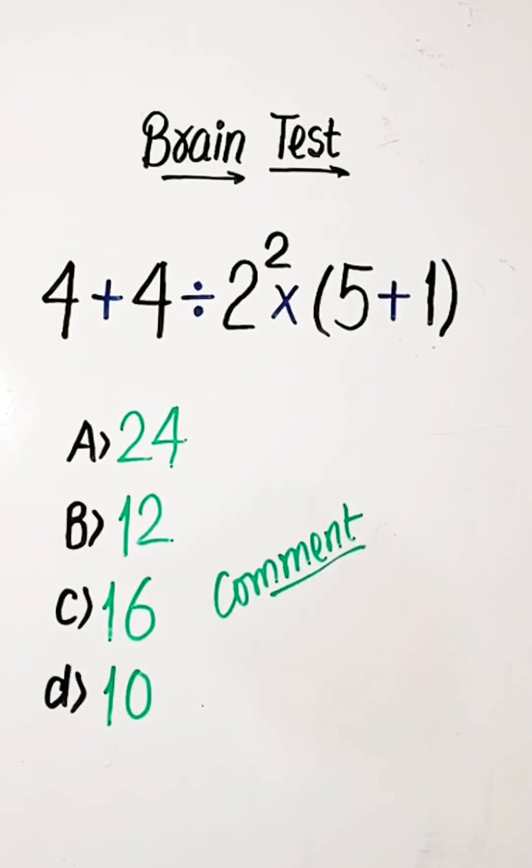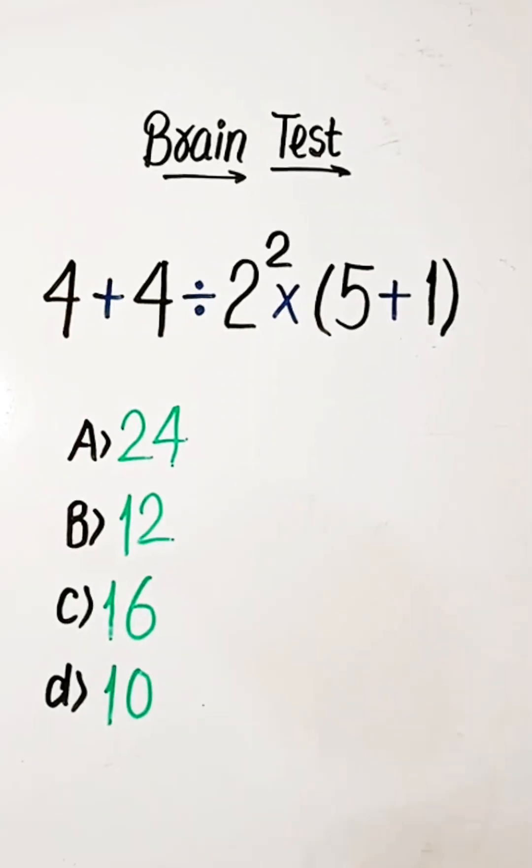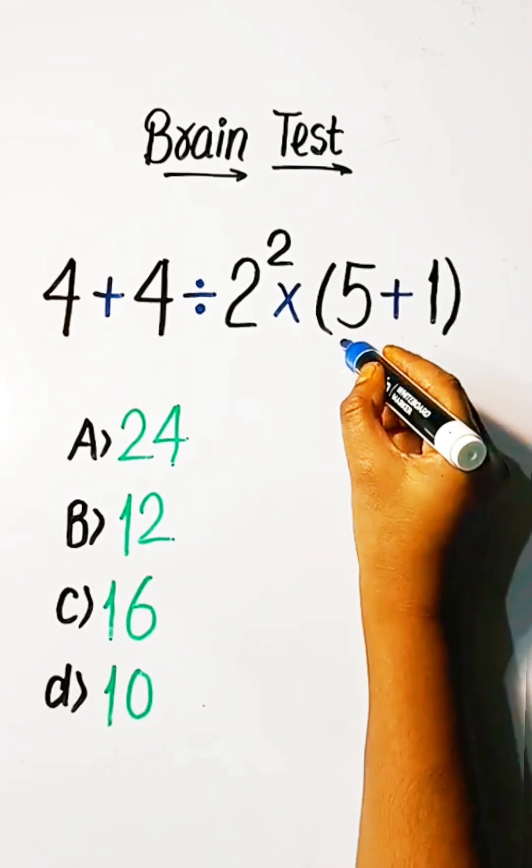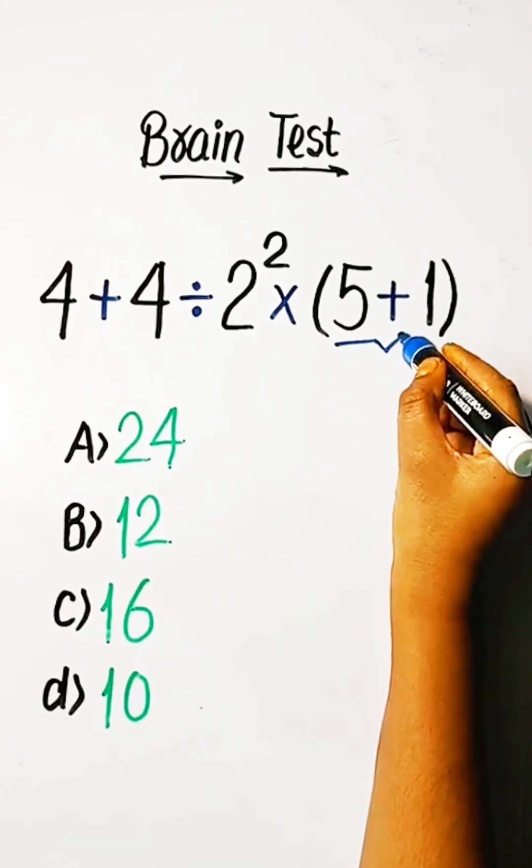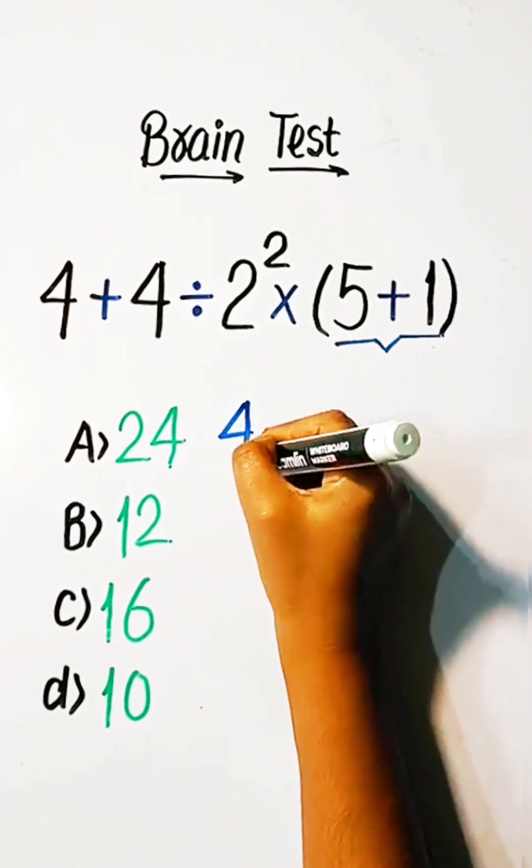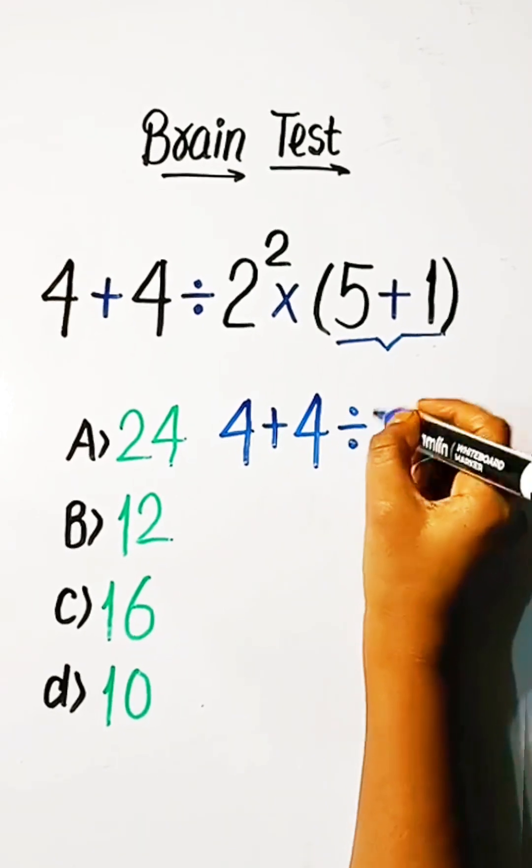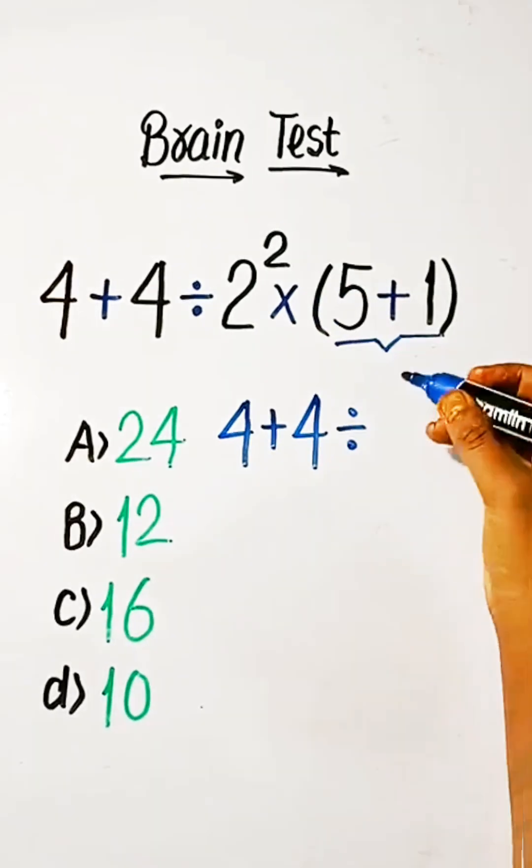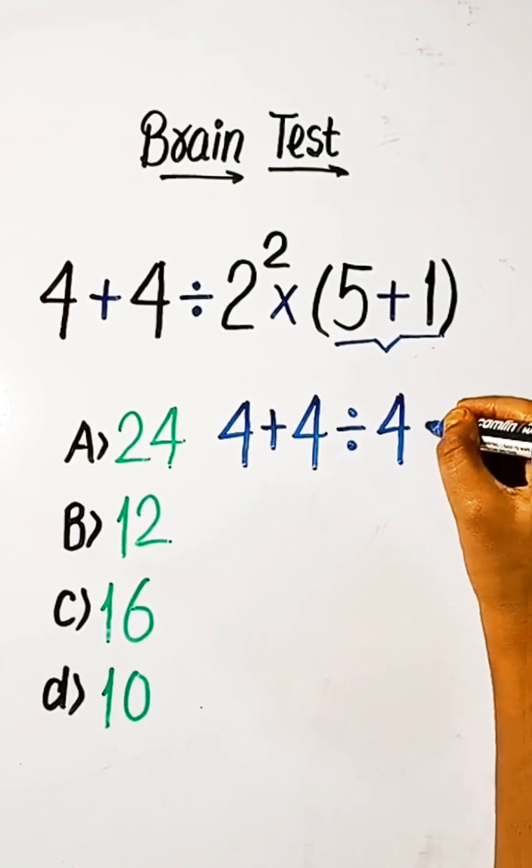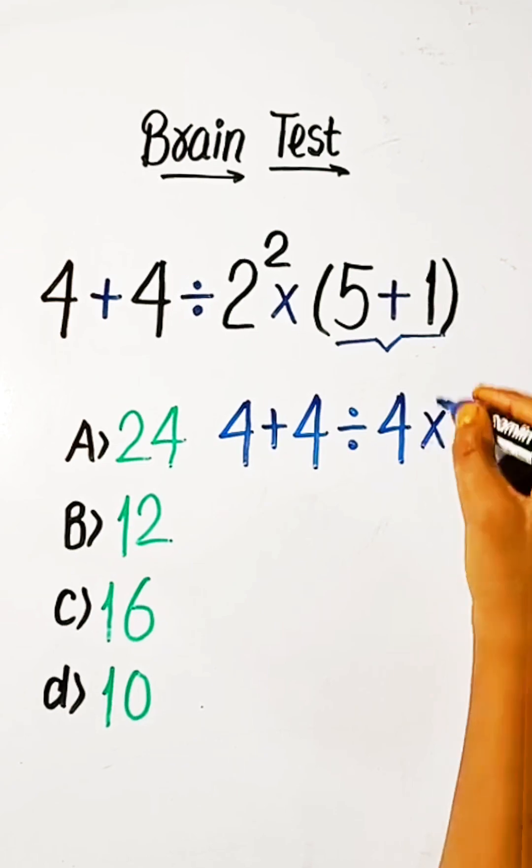Now it's time to solve this problem. So, we will start from bracket part and write here 4 plus 4 divided by 2 square. 2 square is 4 into 6.